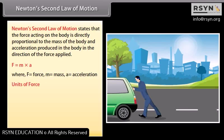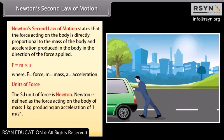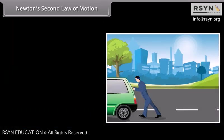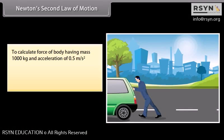Units of force. The SI unit of force is Newton. Newton is defined as the force acting on the body of mass 1 kg producing an acceleration of 1 meter per second square. Unit = kg·m/s² or Newton. To calculate force of body having mass 1,000 kg and acceleration of 0.5 m/s², then F = 1000 × 0.5 = 500 Newton.